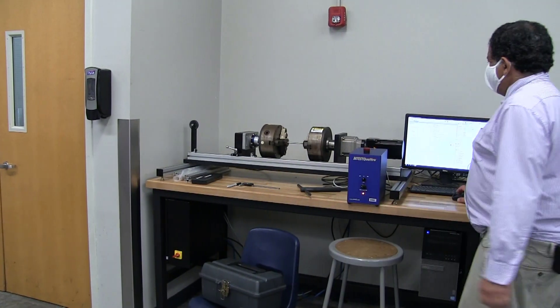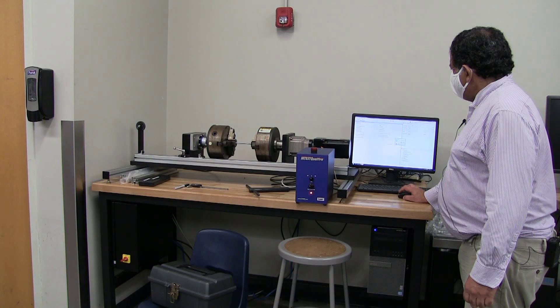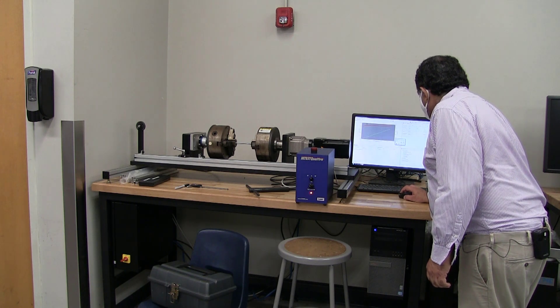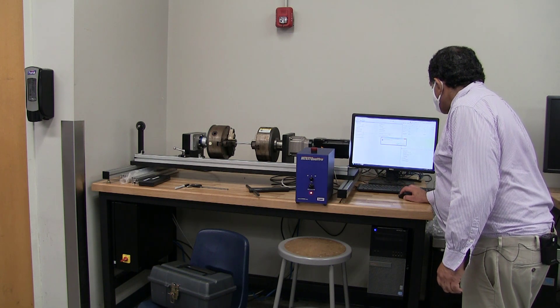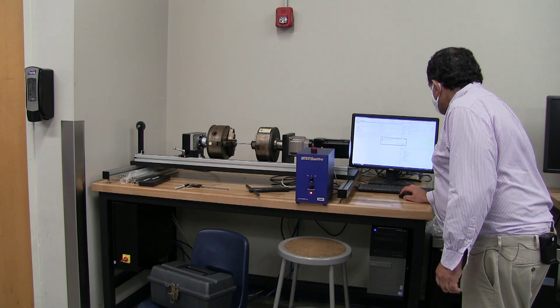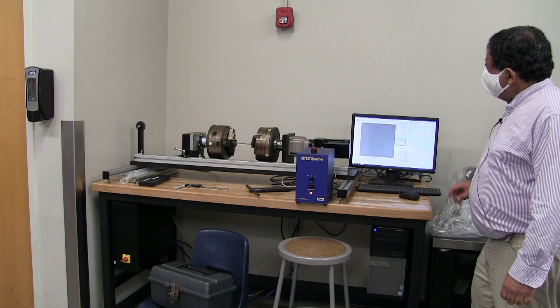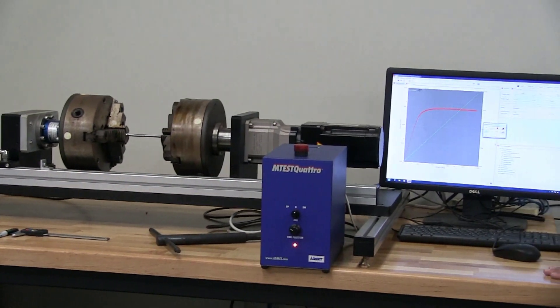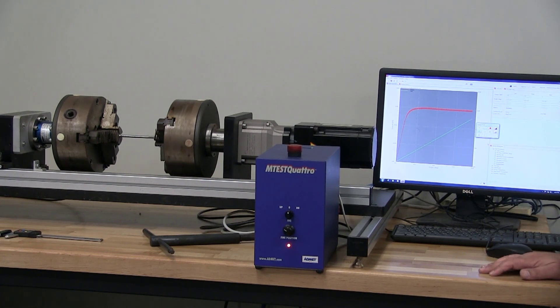Then let's run the experiment. Again, I have entered the material data into the computer, and we're just going to run the test now. Let's verify the parameters. Let's run the test. There we go. Again, the torque went up to over here, and now you're yielding. The twist is going to continue. You can see the chuck rotating and rotating, and we'll see how long it goes before it reaches torsional failure.